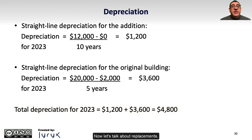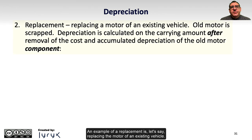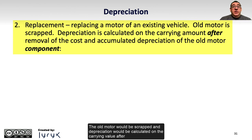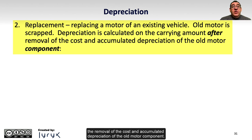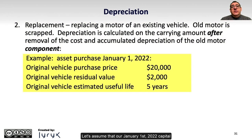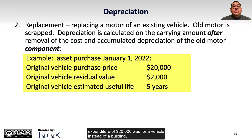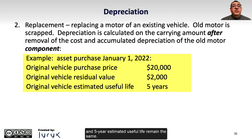Now let's talk about replacements. An example of a replacement is replacing the motor of an existing vehicle. The old motor would be scrapped and depreciation would be calculated on the carrying value after the removal of the cost and accumulated depreciation of the old motor component. Let's assume that our January 1, 2022 capital expenditure of $20,000 was for a vehicle, and that all the other assumptions including the same $2,000 residual value and five-year estimated useful life remained the same.